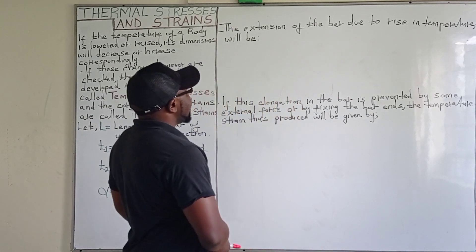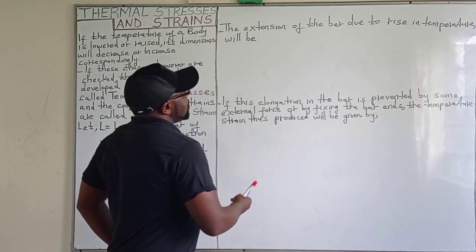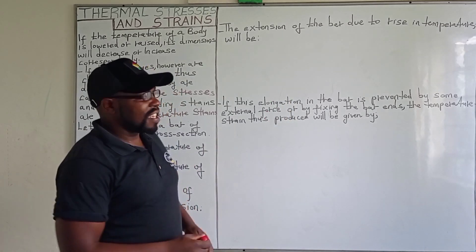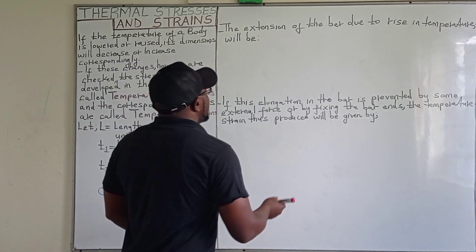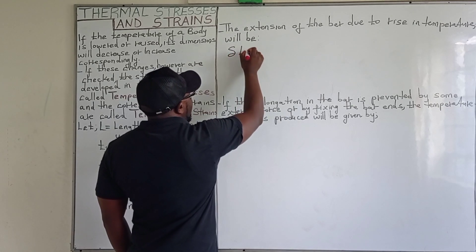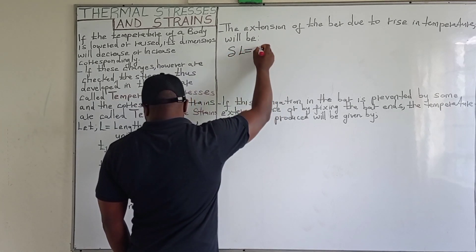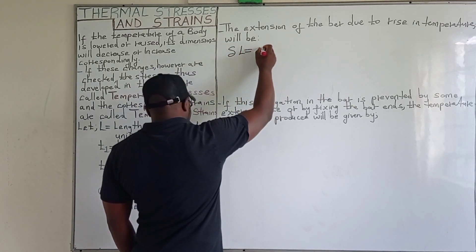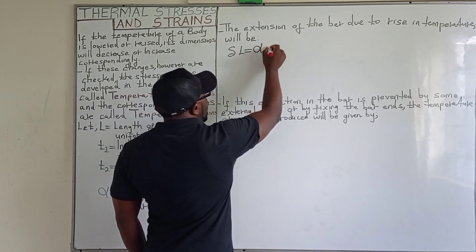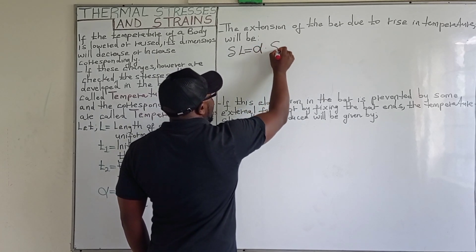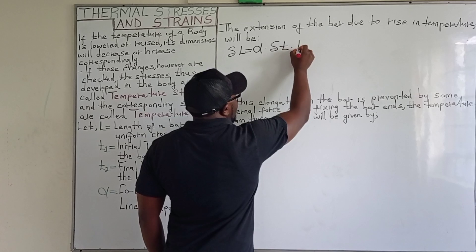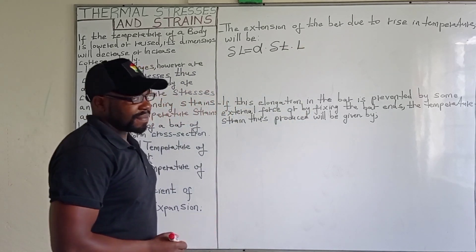The extension of the body due to rise in temperature is usually given by: the change in length equals the coefficient of linear expansion of the body multiplied by the change in temperature, multiplied by the length of the body.